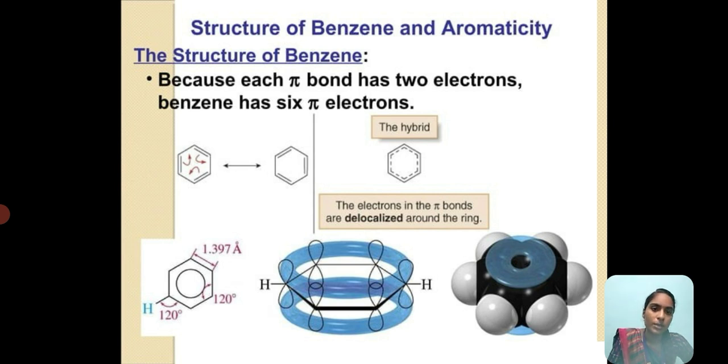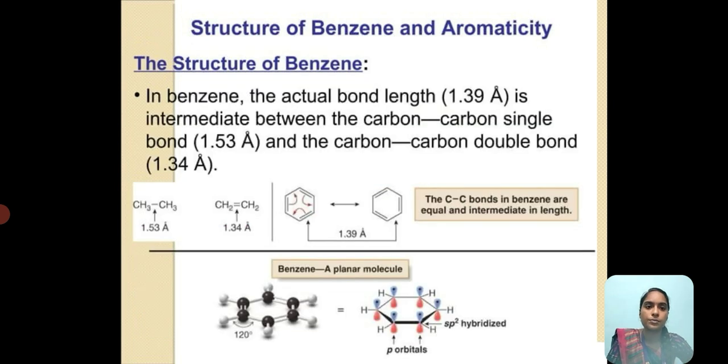The unhybridized p orbital on each carbon overlaps with adjacent orbitals. The bond length between benzene carbon atoms is 1.39 angstroms, which is intermediate between a carbon-to-carbon single bond and double bond. This also accounts for the unusual stability of benzene.